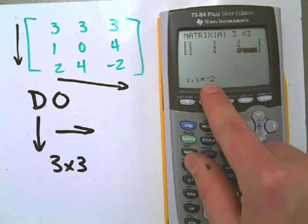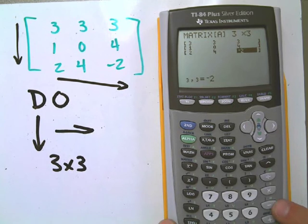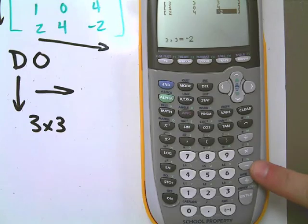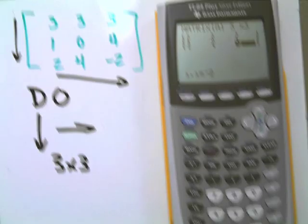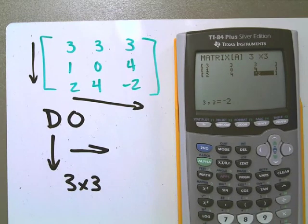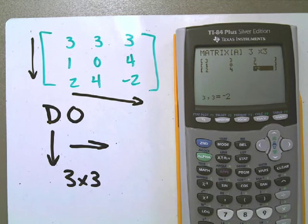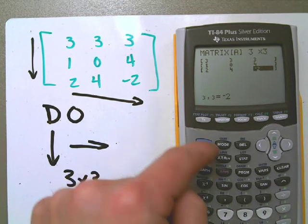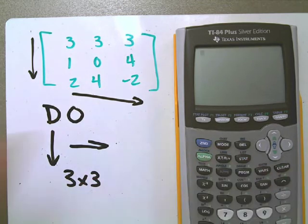Now make sure on the last one with the negative, you don't type subtract two. You cannot use the subtract button right here. You have to use the negative button down here or you'll get an error. Now this is a little confusing, but you actually have to go second quit and get out of editing that matrix before you can go on any further.